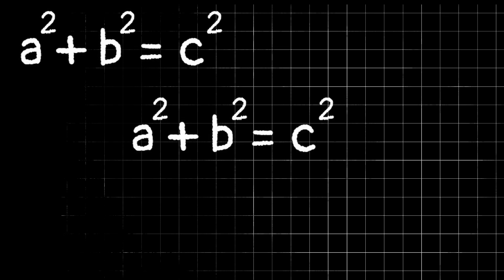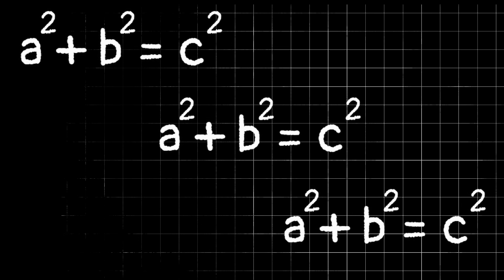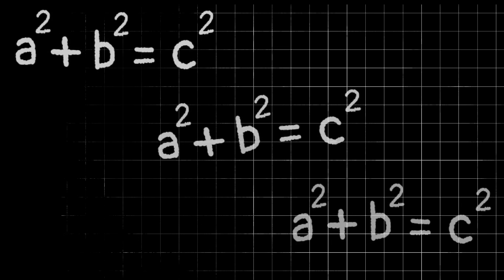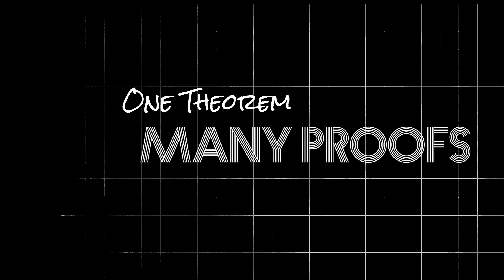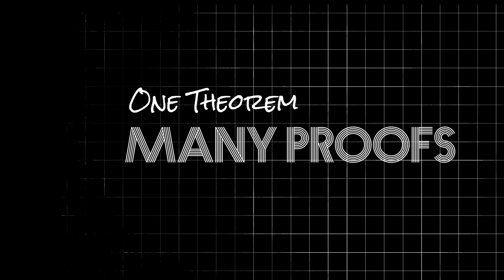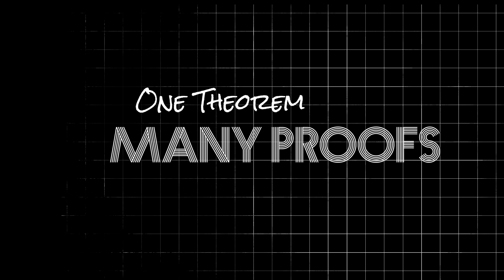This theorem is probably something you've memorized in school, but I want to go behind the scenes and really investigate why a squared plus b squared equals c squared. Just as a disclaimer, this is only one of many proofs of the Pythagorean theorem, so if you're interested in this video and want to see some other ways we can visualize this, be sure to check out the other videos on my channel.